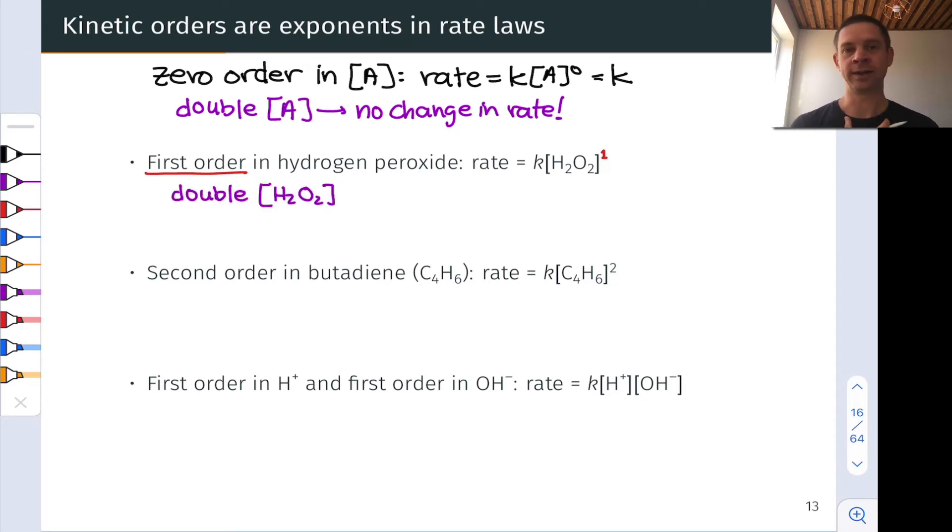What's going to happen if we double the concentration of H2O2? Well, if we follow through the math, doubling the H2O2 concentration is going to cause a doubling of the rate. And in fact, we saw this at the start of this video.